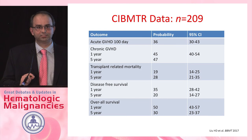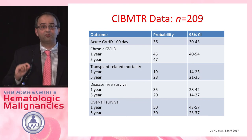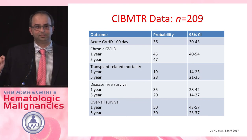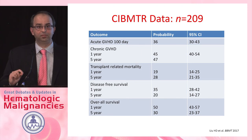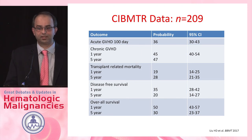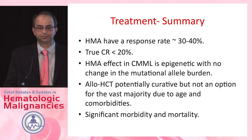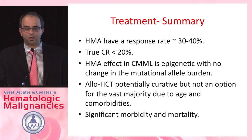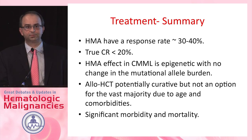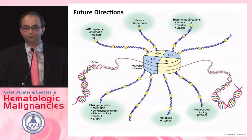The concept of graft-versus-host disease and relapse-free survival proposed by the CIBMTR is now something we must factor in when studying this disease. In summary for treatment: about 30 to 40% respond to HMA — it is an epigenetic response with no change in allele burden. Allogeneic transplant, although potentially curative, is an option for very few of these patients.